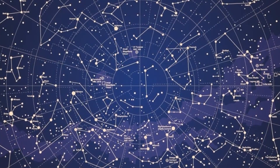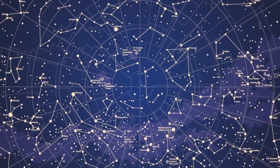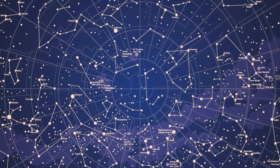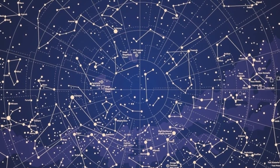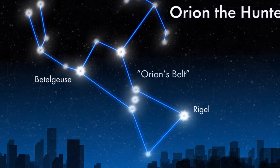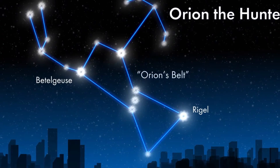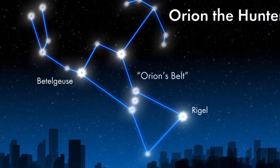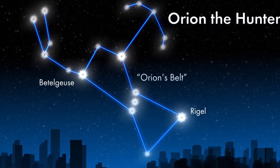If you look at the night sky you will see that the stars are scattered all around randomly. Since ancient times, people tried to group the stars into clusters and imagine those clusters as objects, humans, or animals. For example, there is a constellation called Orion which represents a hunter.